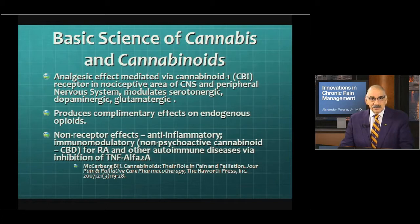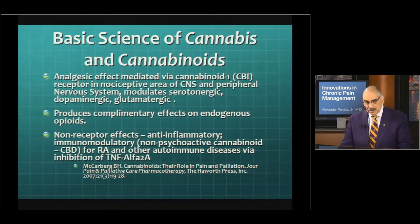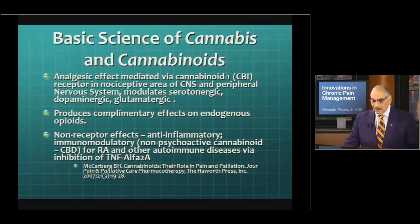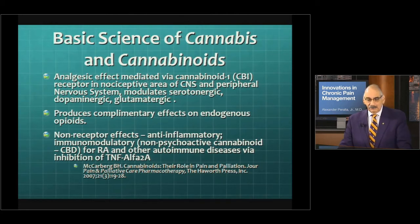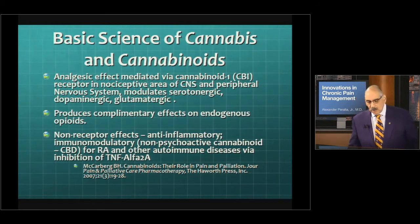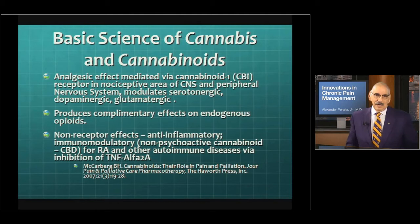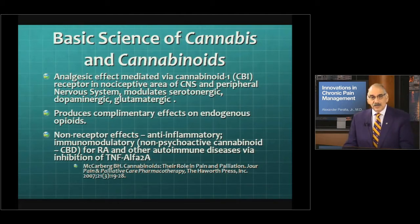Because of the wasting syndrome that occurs with a lot of these chronic diseases like AIDS, but also like neurodegenerative disorders, heart disease, and pulmonary disease, it does also provide a complementary effect on endogenous opioids. So beta-endorphins, dynorphins, and encephalins are also affected. There's also a non-receptor, anti-inflammatory, immunomodulator type of receptor that is also affected by tetrahydrocannabinol, and it affects and inhibits a certain substance called tumor necrosis factor alpha-2a.